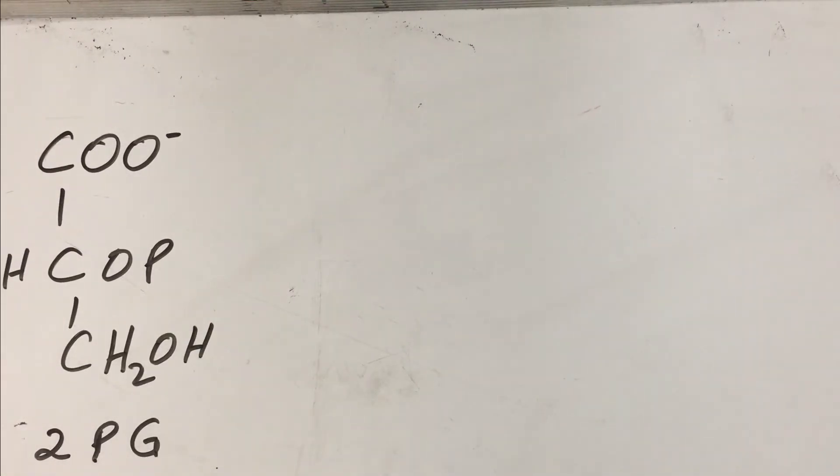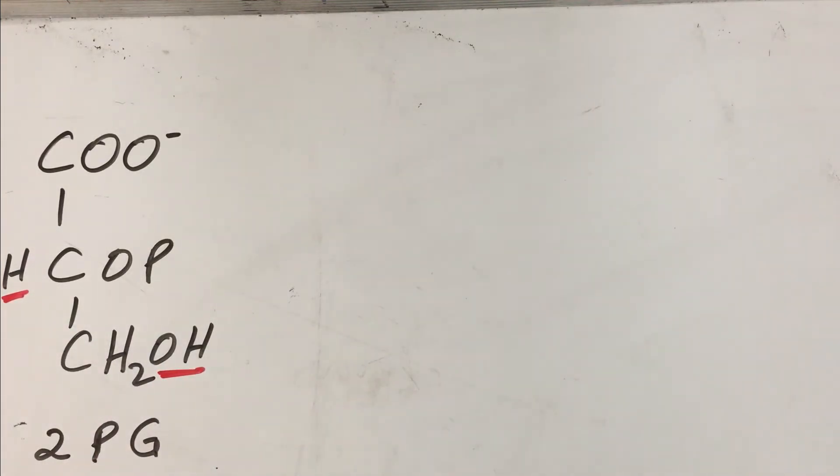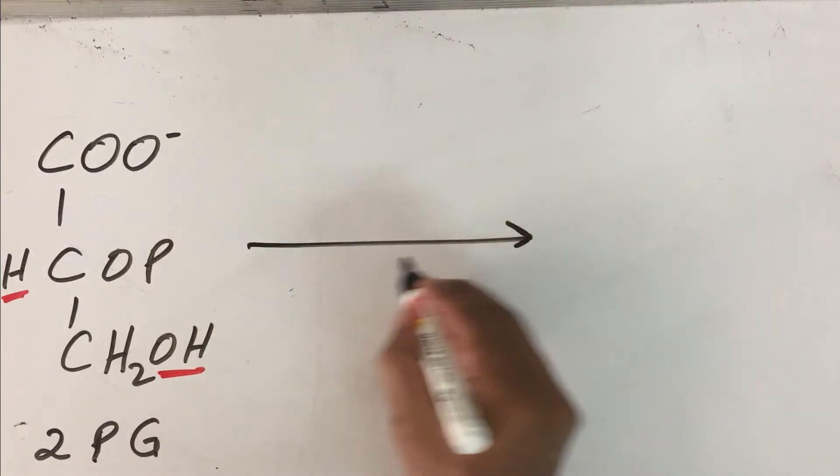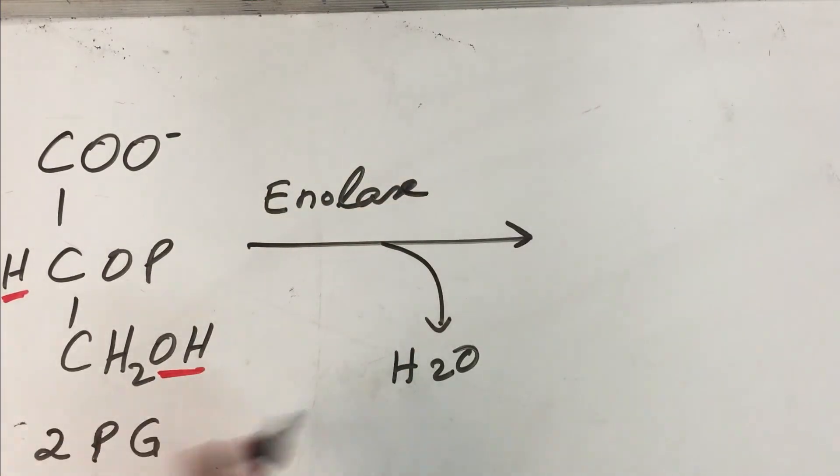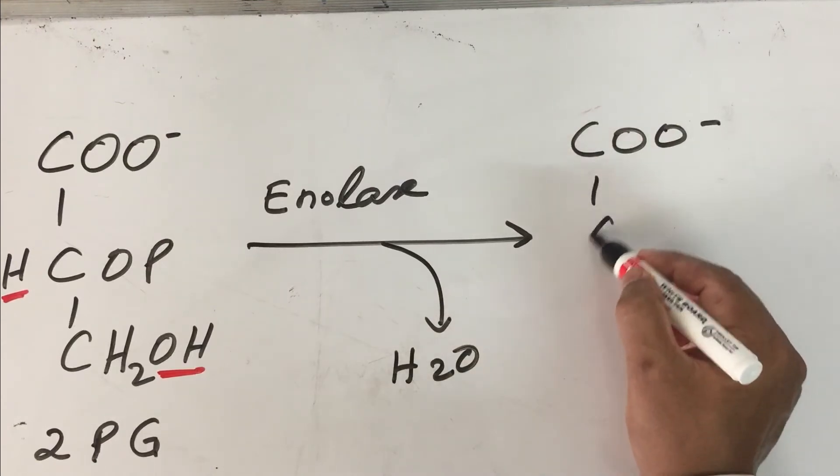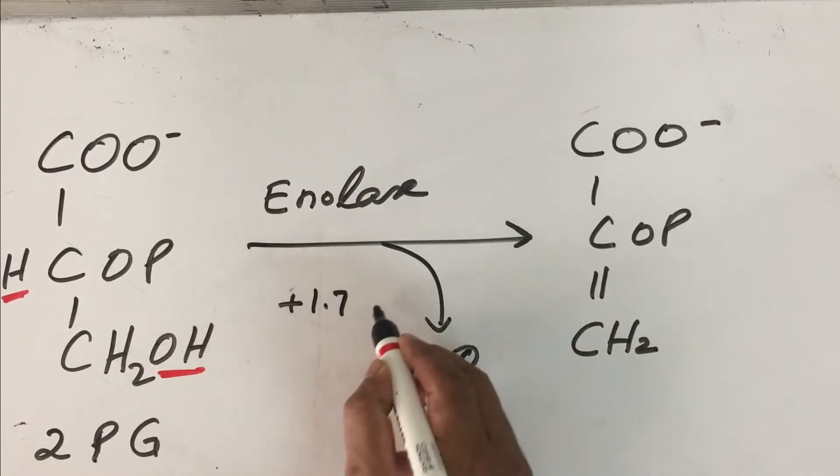Now we come to the ninth step in glycolysis. The purpose of the ninth step is again to prepare the molecule to harvest energy, to increase the energy content. We are left with 2-phosphoglycerate. From this 2-phosphoglycerate, a molecule of water is going to be removed: one OH here and one hydrogen here. The enzyme enolase will remove the molecule of water, and you are left with a double bond created here and this becomes CH2. The delta G of this reaction is plus 1.7 kilojoules per mole.